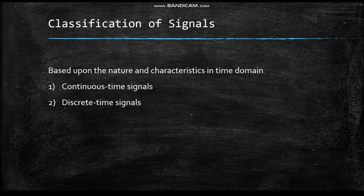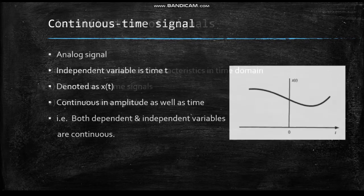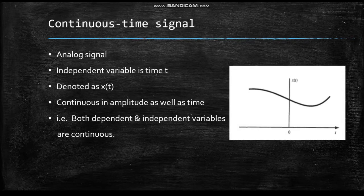Based on the nature and characteristics of the signal in the time domain, signals are classified into two types: continuous time signals and discrete time signals. Continuous time signals are otherwise known as analog signals. Here the independent variable is time, denoted by the letter t, and the signal is represented as x(t). It is continuous in both amplitude and time — that is, both the dependent and independent variables are continuous in nature.